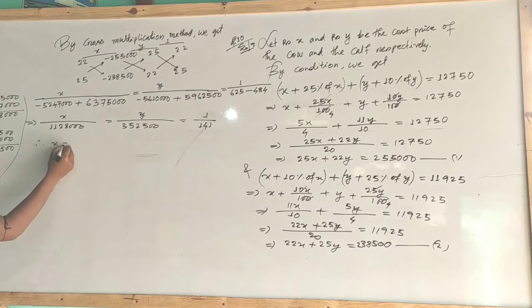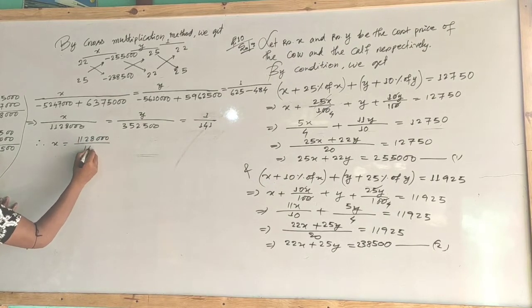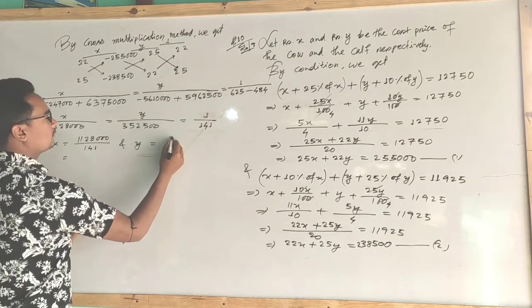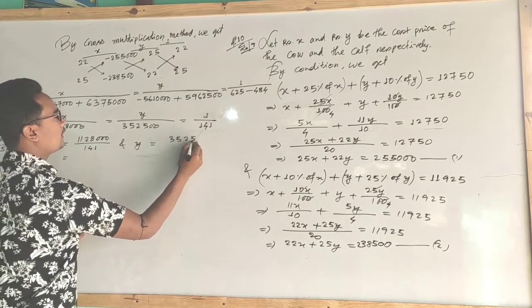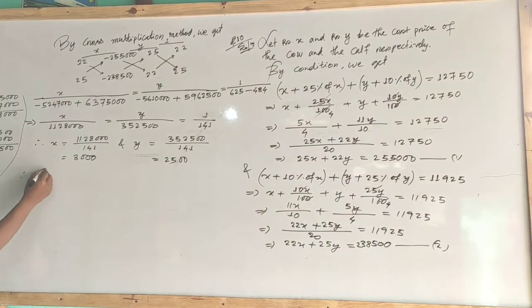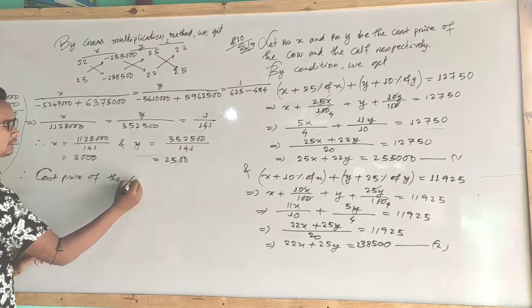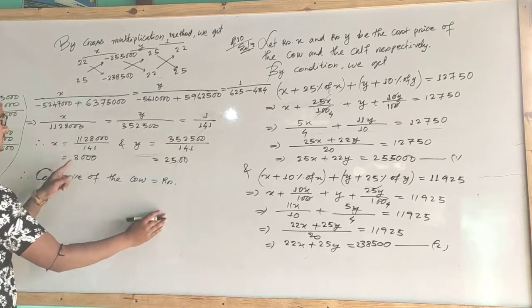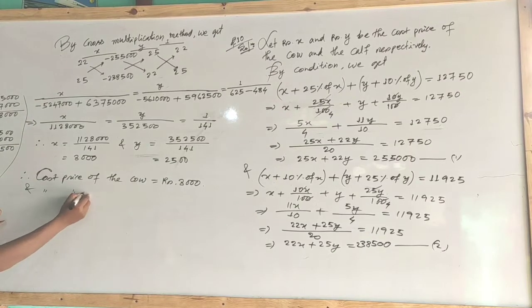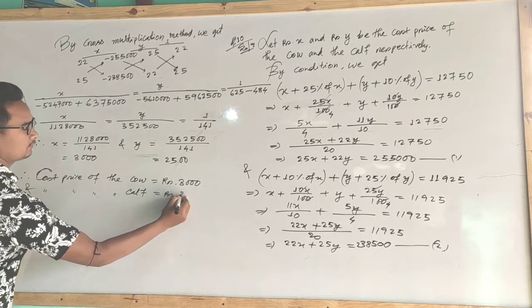So it is 1,800,000 by 141... The cost price of the cow is equal to rupees 8,000 and the cost price of the calf is equal to rupees 2,500.